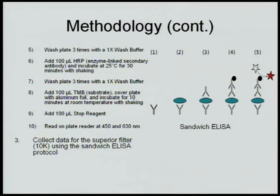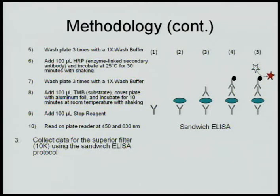After that, we add 100 microliters of a substrate known as TMB, and we cover the plate with aluminum foil and incubate for 10 minutes at room temperature. This combines with the enzyme-linked secondary antibody to change color. After that, we add 100 microliters of stop reagent, and we can read the plate.